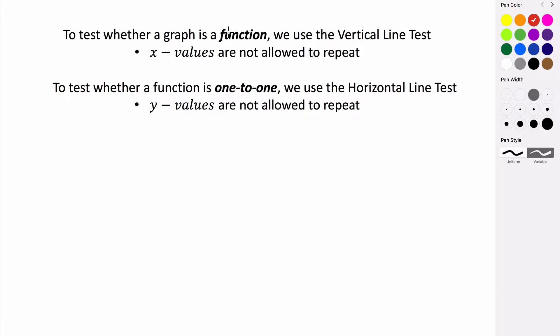Right? So if you do the vertical line test, that means that a vertical line will never intersect our graph at more than one point. So that means that something's a function.